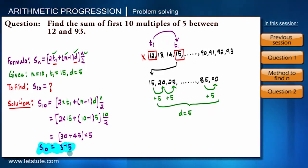One point I would like to raise here: we have not added all the multiples of 5 between 12 and 93, we have just added first 10 multiples. That was a slight difference in this question.